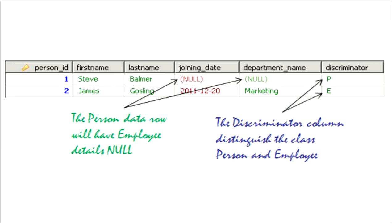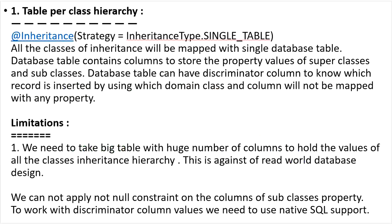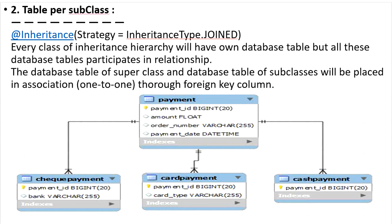There are limitations with Table Per Class Hierarchy: we need a large table with a huge number of columns, and to work with the discriminator column value we need to use native SQL queries.